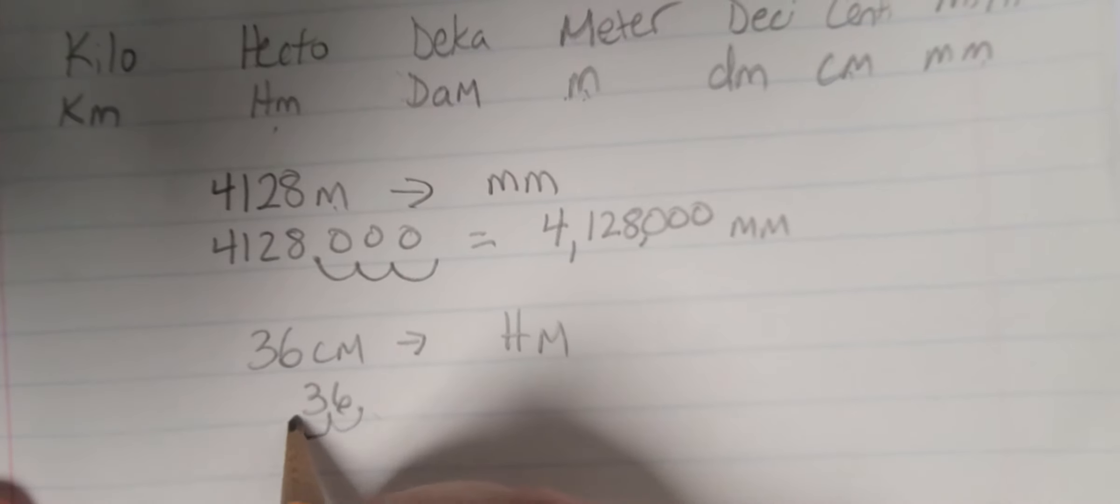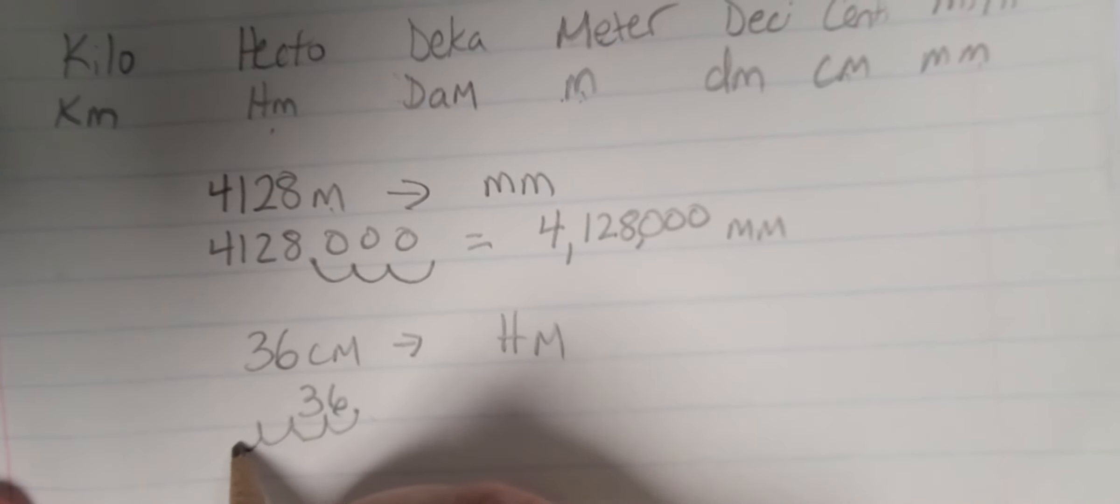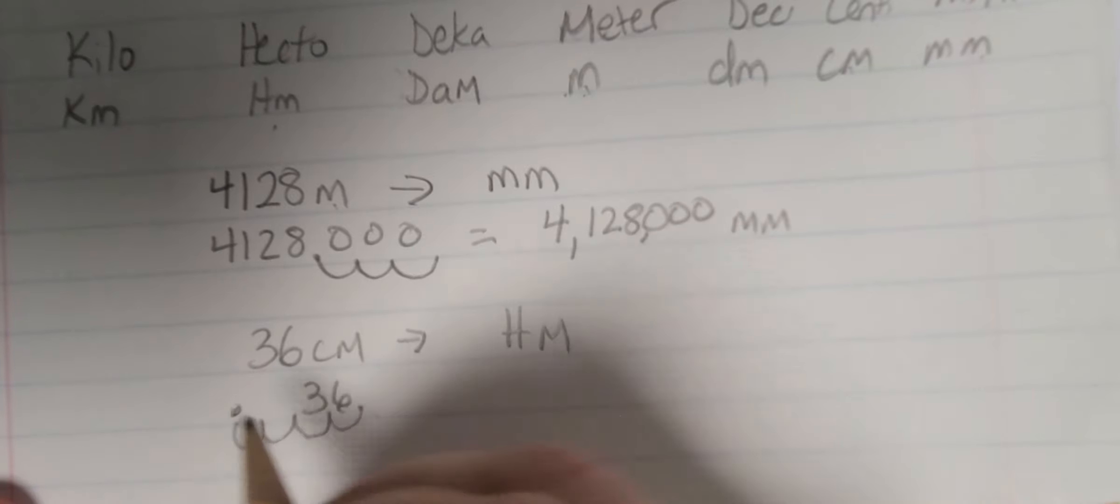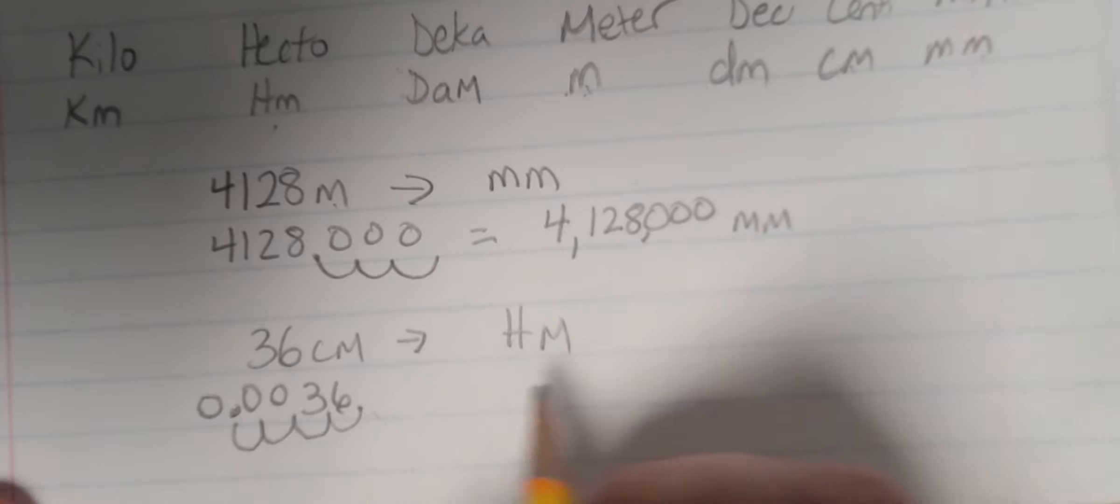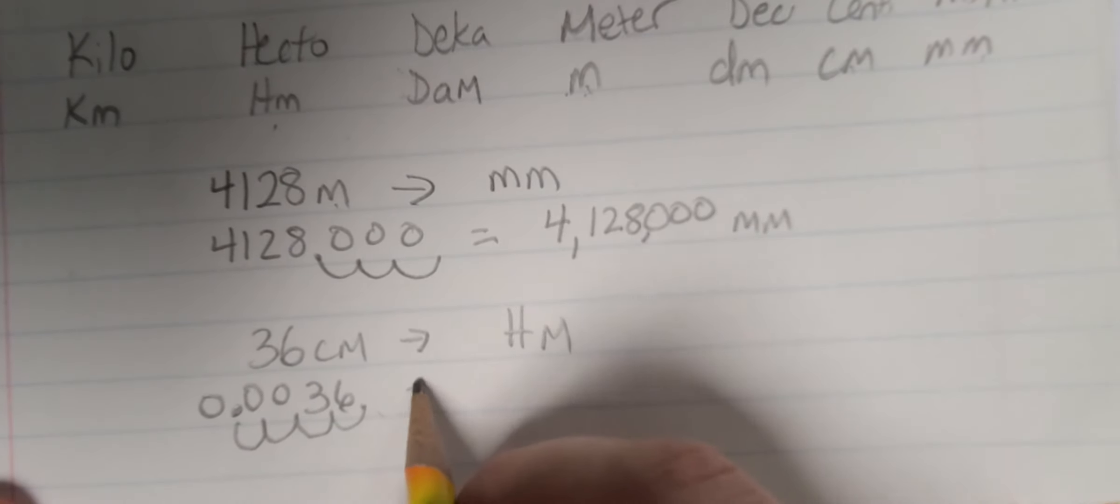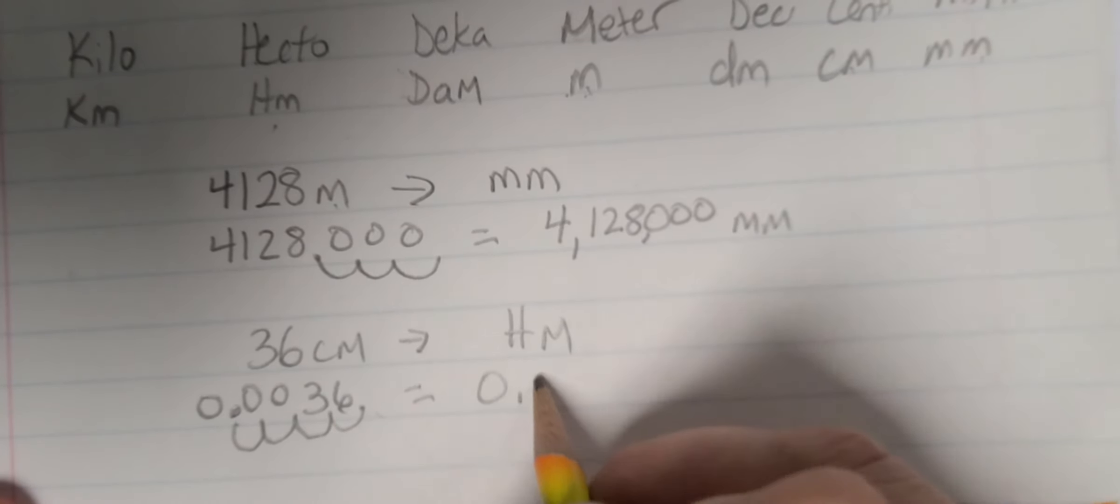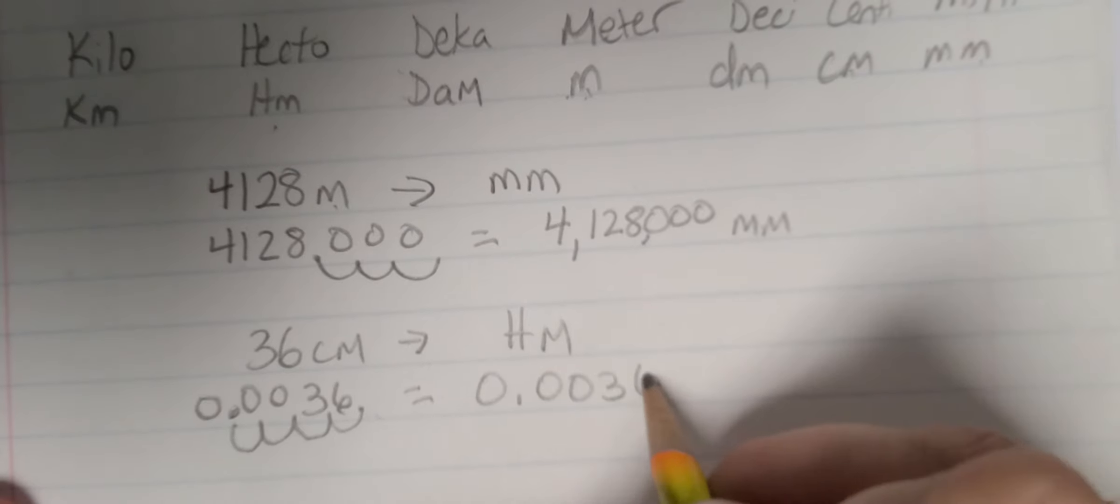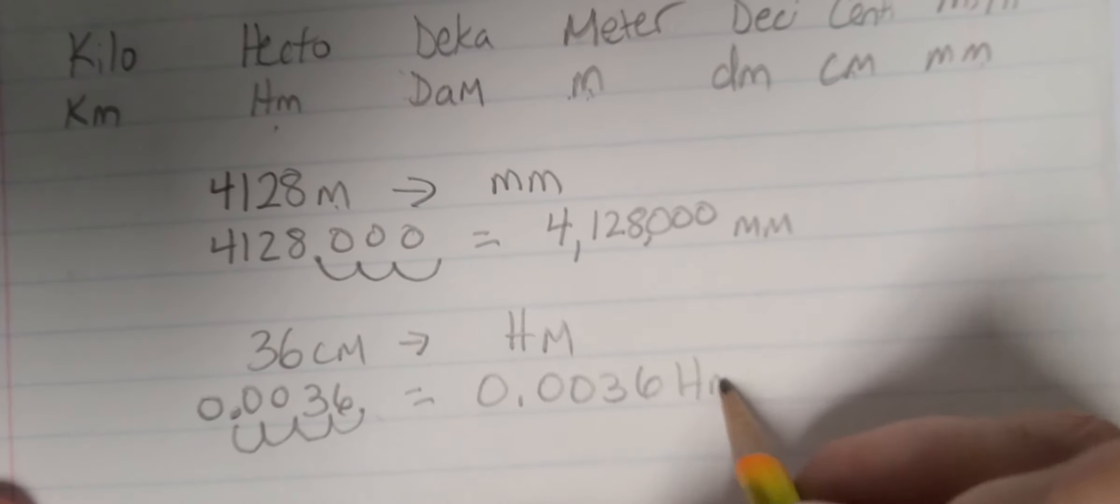So I go 1, 2, 3, 4 to the left. I put my decimal point. I need two zeros as placeholders, and I need my leading zero. So we get this to become 0, 0, 0, 3, 6 hectometers.